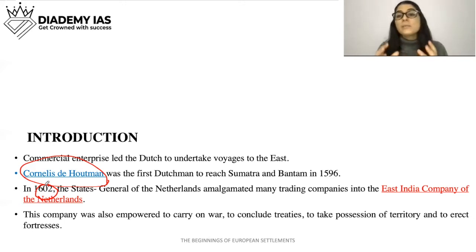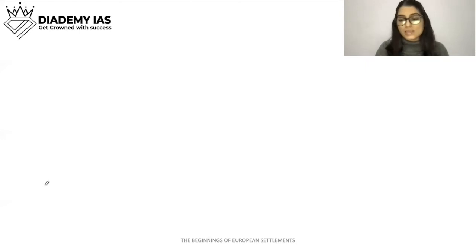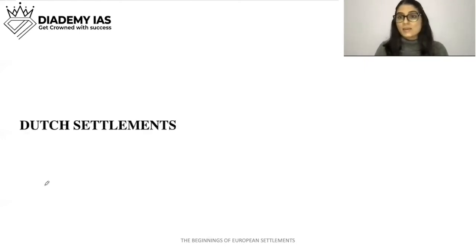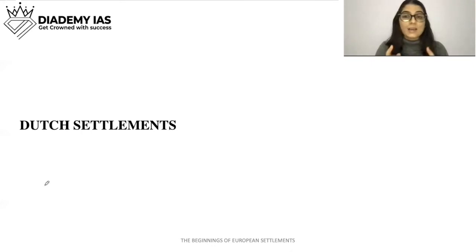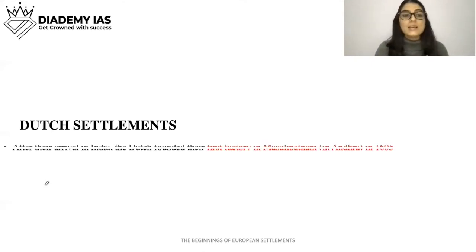The Dutch East India Company was given powers to go east, trade, consolidate their position, occupy territories, and build forts — so Dutch trade with the east started this way. Now, regarding Dutch settlements: just as I mentioned earlier, you need to remember which were the important trading areas. I hope you remember the Portuguese settlements; if not, please go back and watch that previous class video.